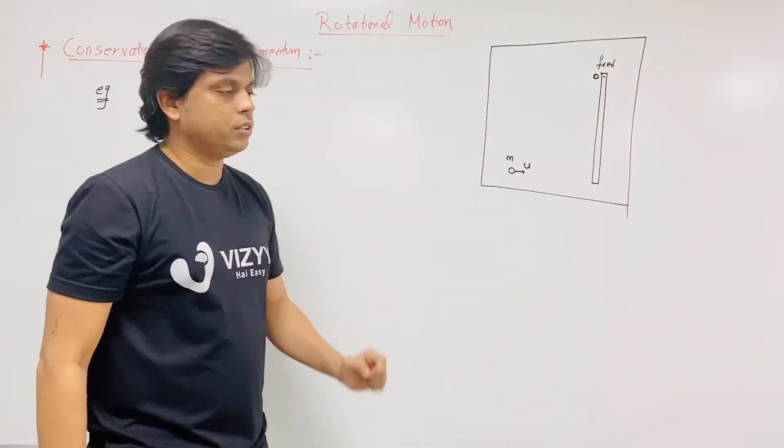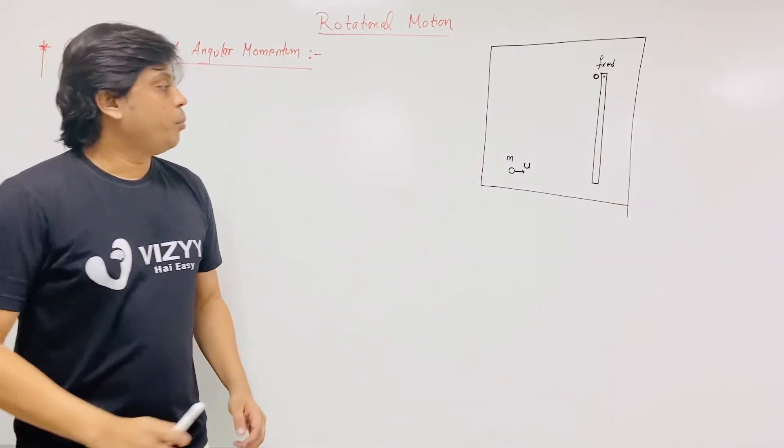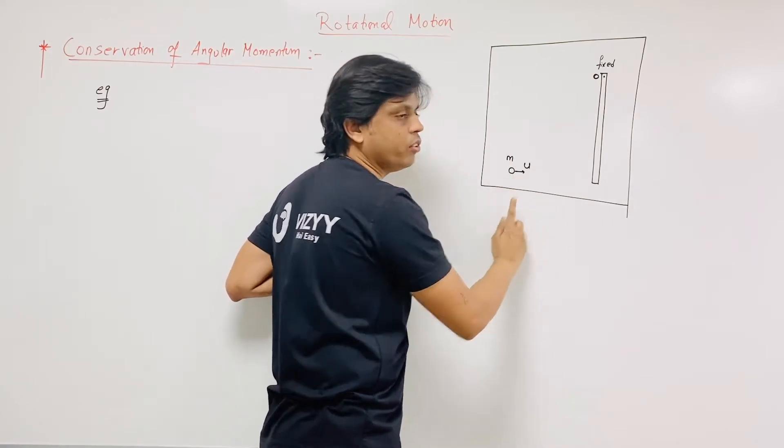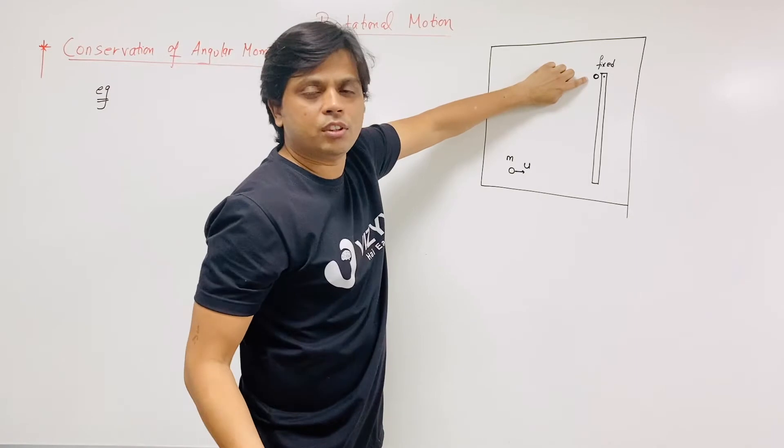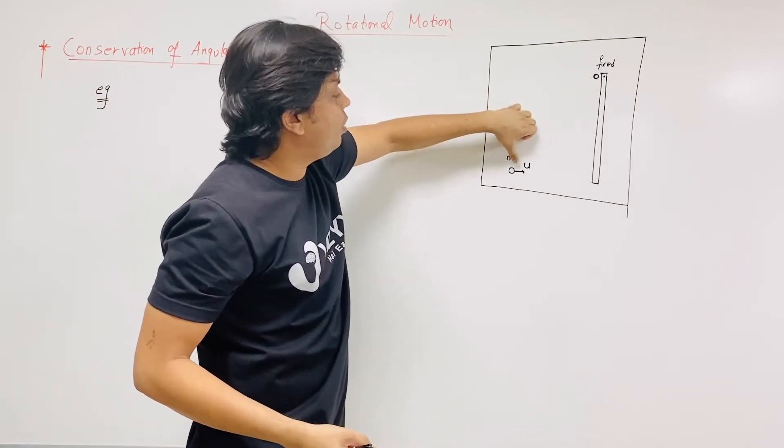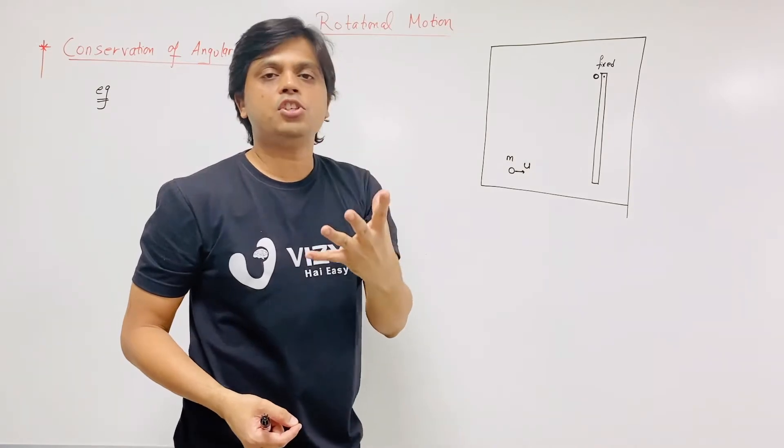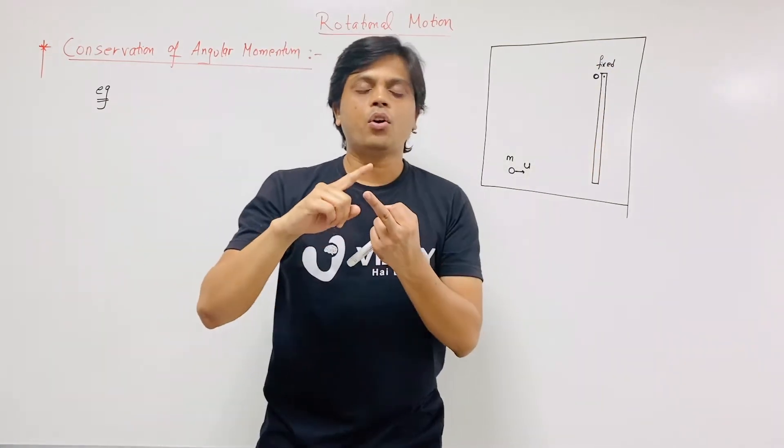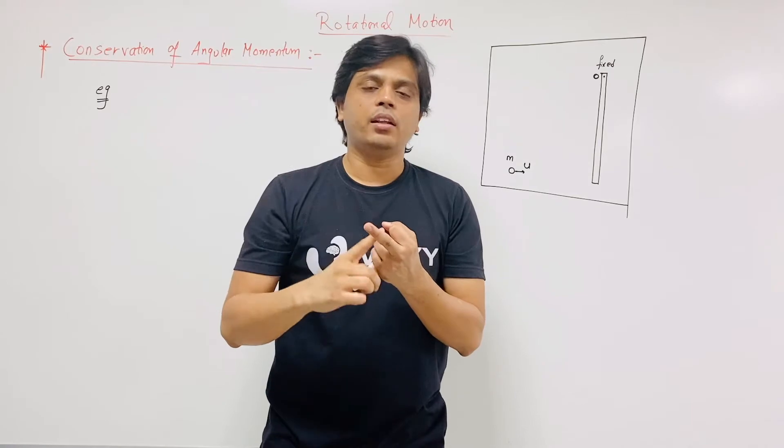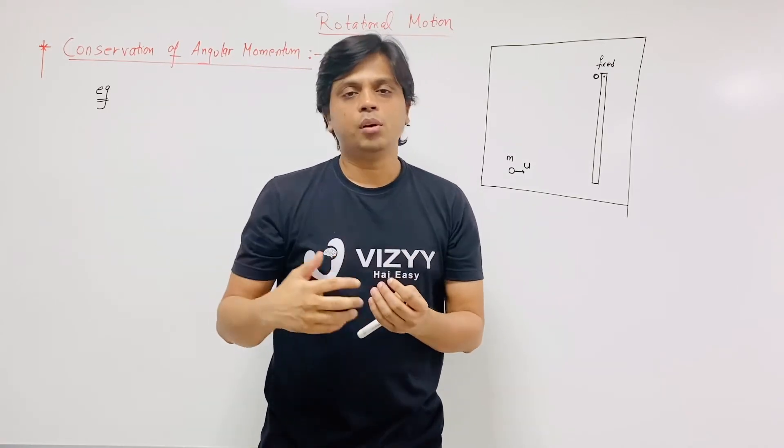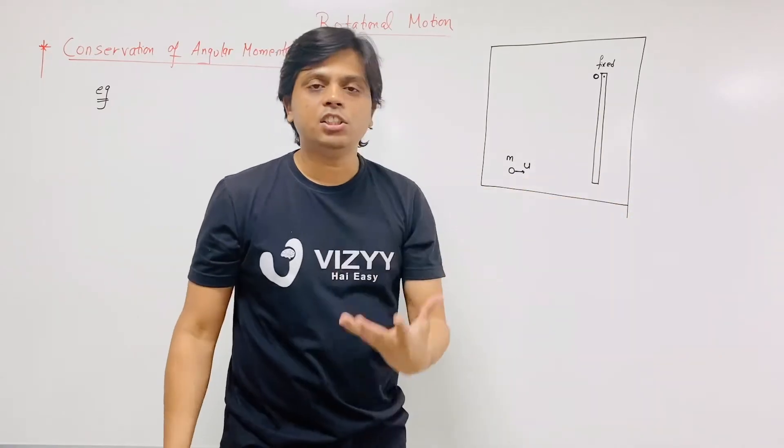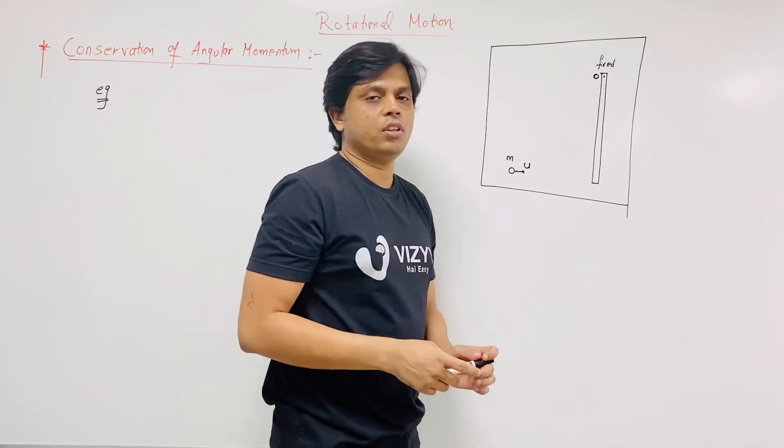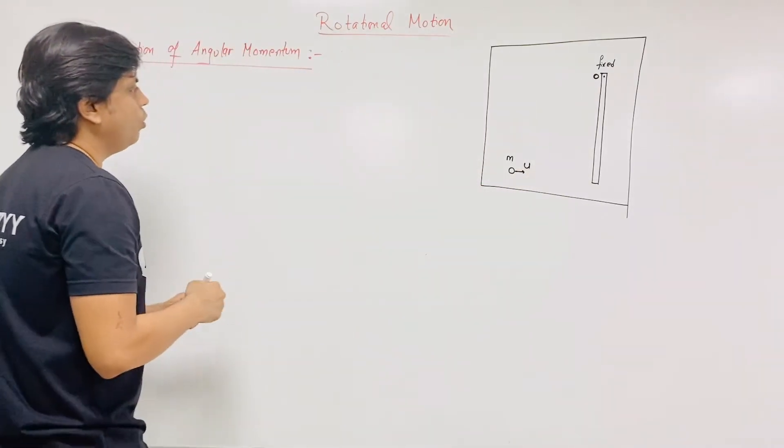Now suppose here in this example if we consider this to be a whole system, initially this ball has a linear velocity. So with respect to this point O which is a fixed point with respect to this frame, this ball or this system has an initial angular momentum. And initial angular momentum is only due to this ball because rod is fixed.